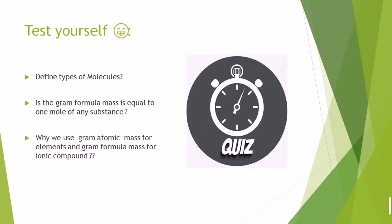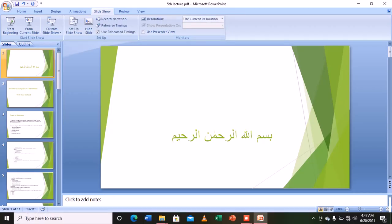Now for the quiz — the most favorite part! There are three simple questions related to the mole concept: What are the types of moles? Is gram formula mass equal to 1 mole of any substance — the answer is yes. Why do we use gram atomic mass for elements and gram formula mass for ionic compounds? There should be a reasoning answer. Good luck to you all, thank you, take care of yourself. Don't forget to subscribe to the channel. Allah Hafiz!